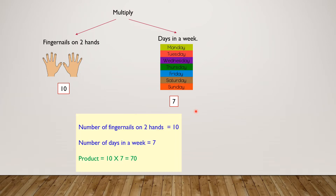So what we have to do is: number of fingernails on two hands, which is ten. Number of days in a week, which is seven. Product equals ten times seven equals seventy. Yay! Let's go.